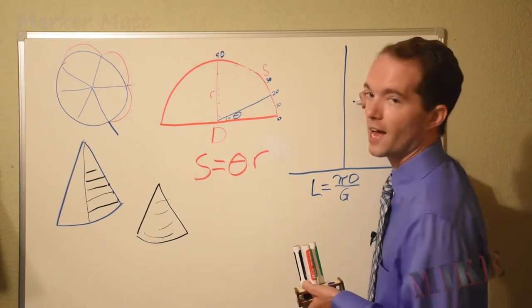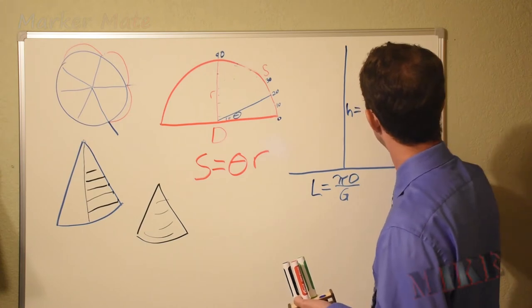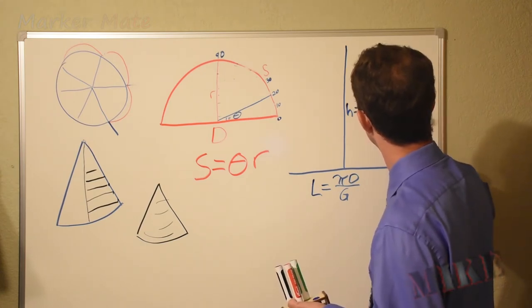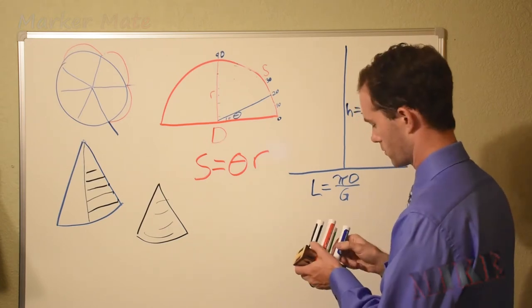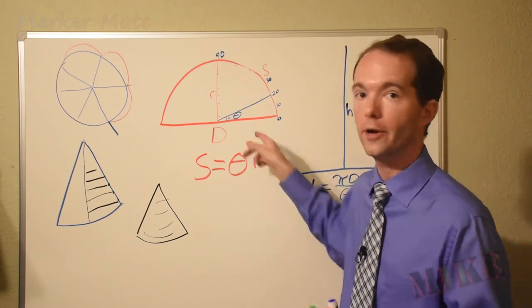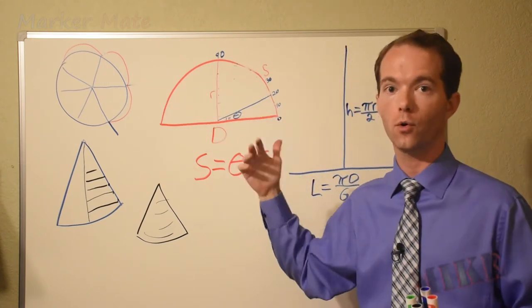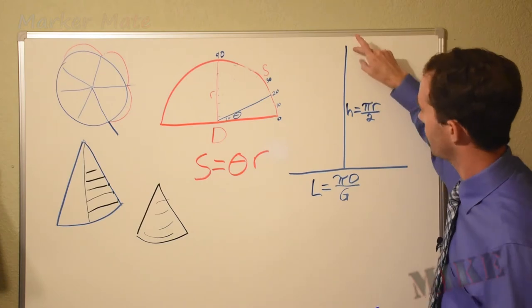So this l, we'll call this height, h, is pi r over two. Because pi r, two pi r is the whole way around a circle. Pi r is halfway. We only want to go a quarter of that. So pi r over two is the height of our gore.